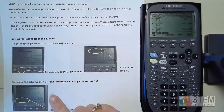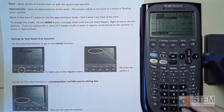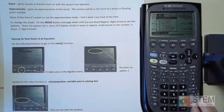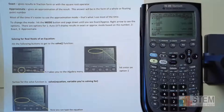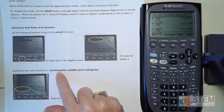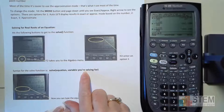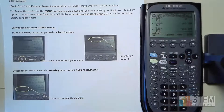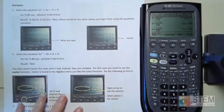To solve for real roots of an equation, we're going to use the solve function. Hit F2 and notice we have solve — this is our algebra menu. Hit enter and now we're ready to type in our problem. The format is: solve( your equation, the variable you're trying to solve for ). Make sure you close that parenthesis.